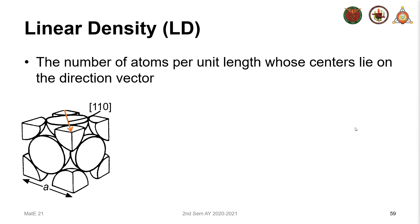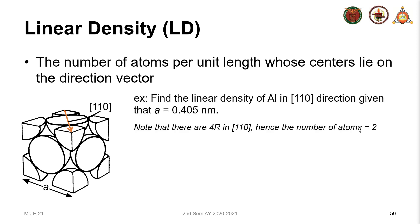So for example, let's look at this example. Find the linear density of aluminum in the [110] direction given that a equals 0.405 nanometers. So aluminum is an FCC crystal as illustrated here, and the [110] direction is this one here.